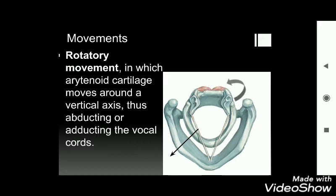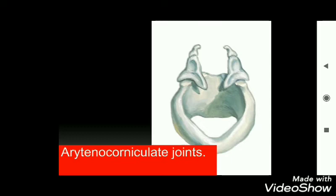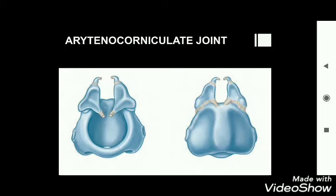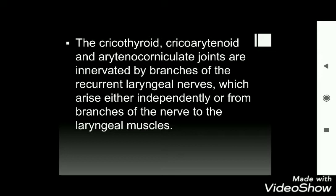The arytenocorniculate joint: the base of the arytenoid cartilage rests over the cricoid laminae, while the apex projects upwards and articulates with the corniculate cartilage, forming the arytenocorniculate joint. We can see this joint from the anterior view in the first image and from the posterior view in the second image.